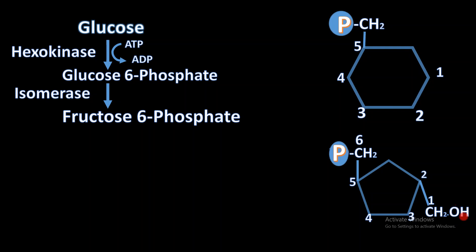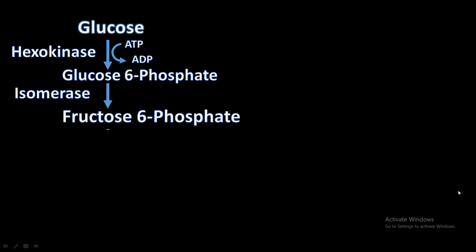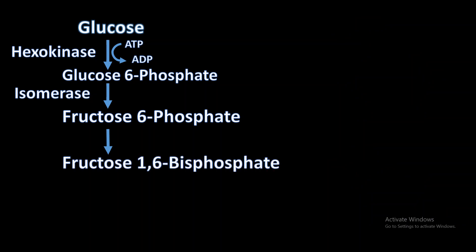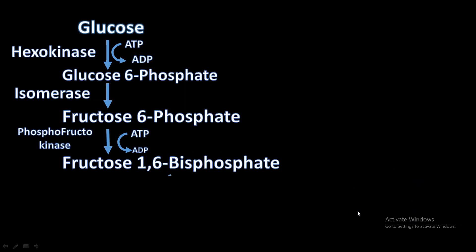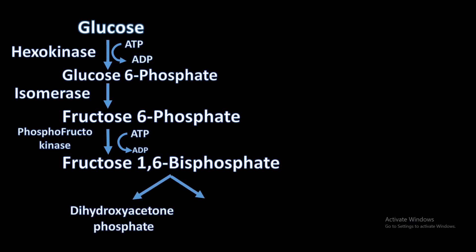We convert glucose-6-phosphate into fructose-6-phosphate because fructose-6-phosphate has another side chain where the hydroxyl group can be removed and replaced by phosphate. Now fructose-6-phosphate gets converted into fructose-1,6-bisphosphate — meaning phosphate is added to the first carbon — with the help of enzyme phosphofructokinase. Phosphate is taken from ATP, which gets converted into ADP.